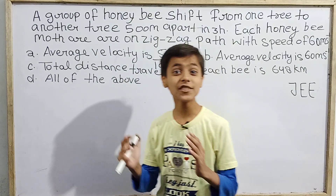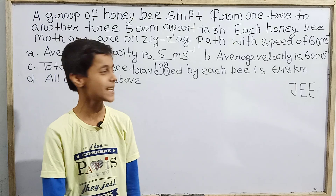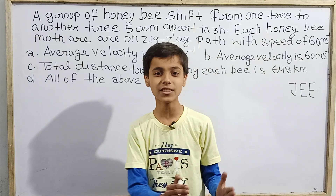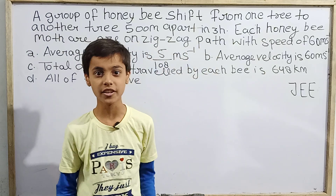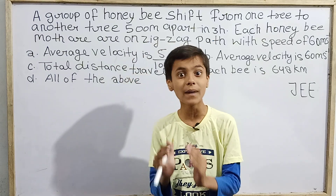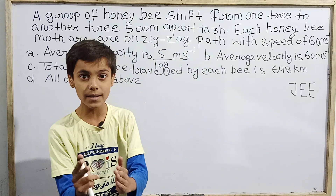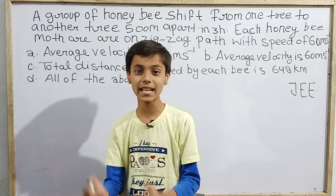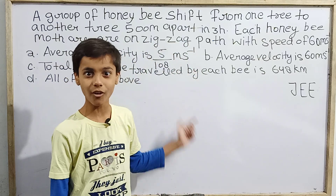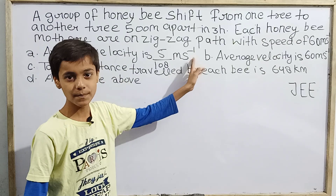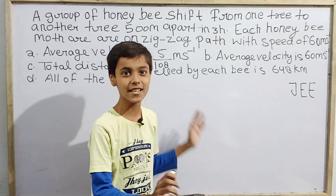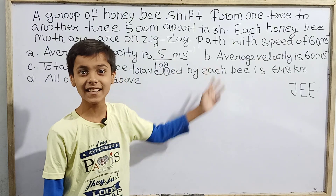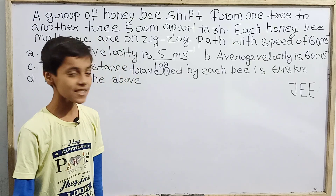Welcome everyone, this is Sarim Khan, and today I'm back with a new question on kinematics for JEE. This question is a multiple option correct type, meaning one, two, three, or all four options can be correct. So we have to try each option one by one — just because option B is correct doesn't mean C and D won't be correct as well.